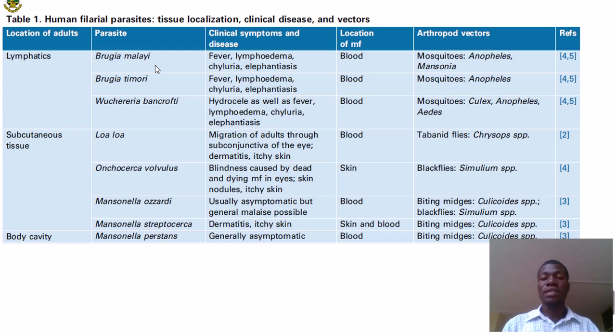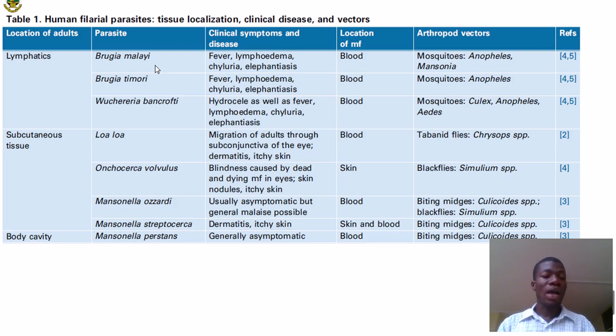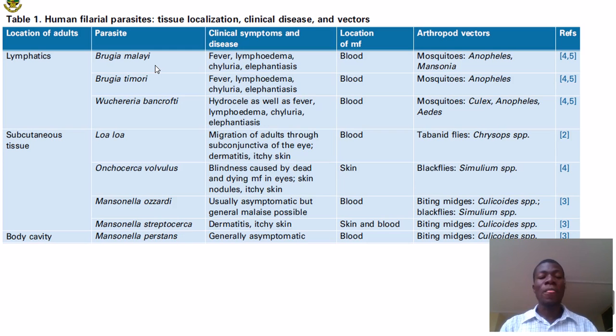In the second section, we have parasites where the adult worms reside in subcutaneous tissue. So you can have onchocerciasis, loa loa, and mansonella. You may have heard of river blindness in some parts of Africa — onchocerciasis is responsible for river blindness. The Simulium black flies are the vectors responsible for the transmission of these parasites.